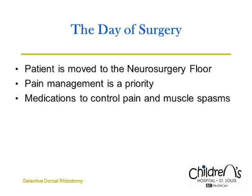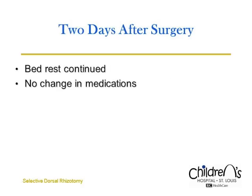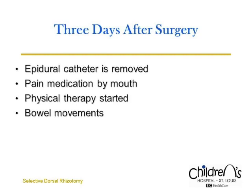The Department of Anesthesiology Pain Service will monitor the pain medications that the patient receives. On the first day after surgery, the bladder catheter is removed. In adult patients, the catheter may be left in place somewhat longer. Patients continue to receive pain medications infused through the epidural catheter for pain and IV muscle relaxers for muscle spasms. Patients are allowed to eat and drink as tolerated. Patients continue to be on bed rest. IV fluids are continued to ensure adequate hydration. On the third postoperative day, the epidural catheter is removed and oral pain medications and muscle relaxers are started. Patients eat and drink as tolerated, but may continue to require IV fluids.